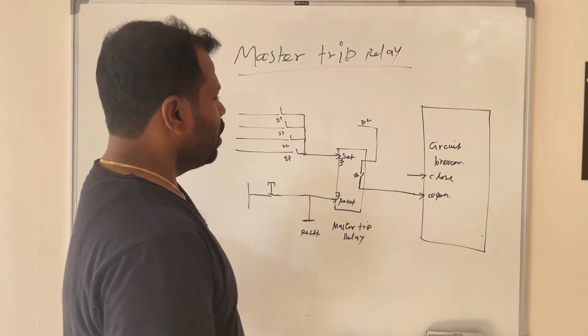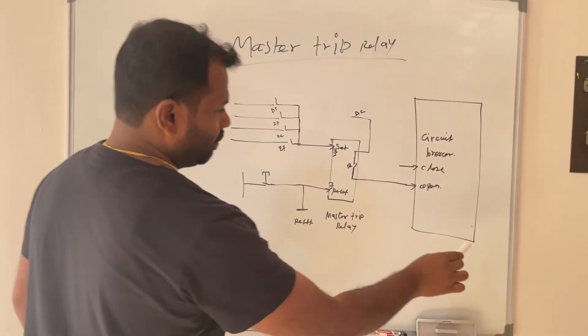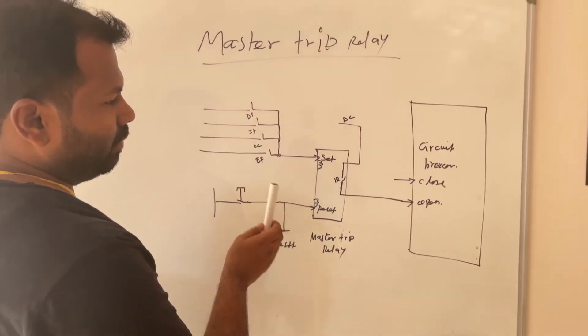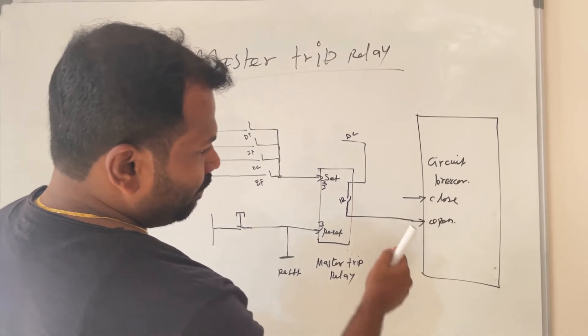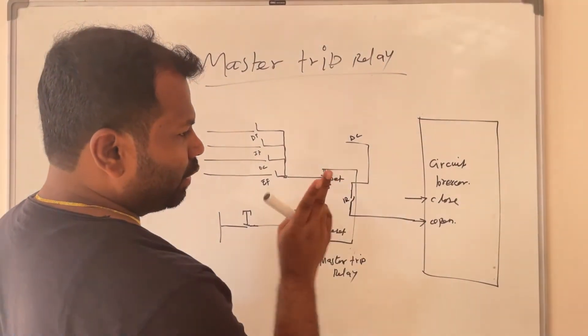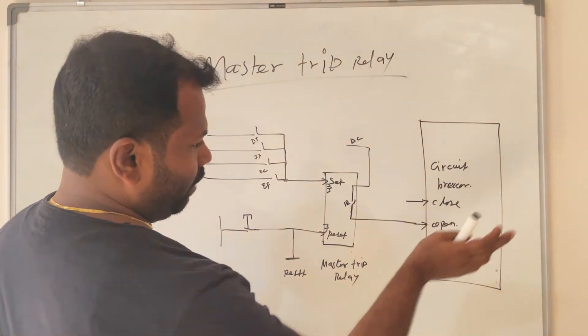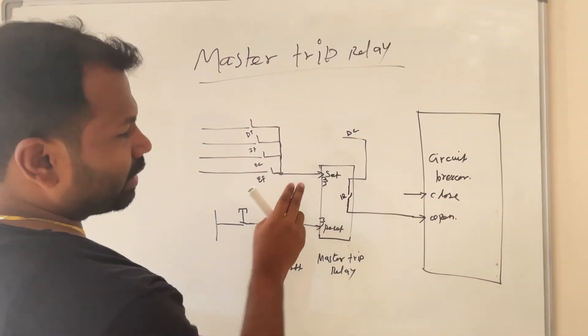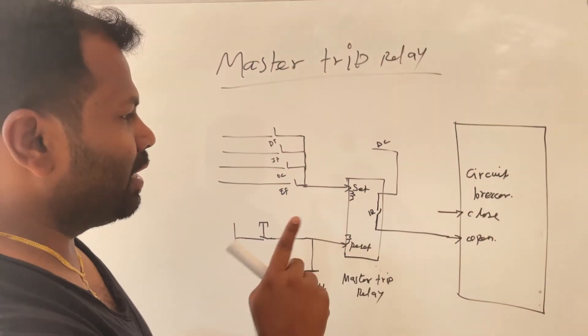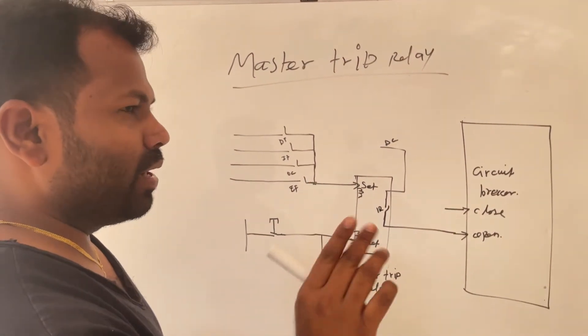This is a basic function block diagram for the master trip relay. This is the circuit breaker. In every circuit breaker there will be two coils: close coil and open coil. This is the master trip relay. Master trip relay has two coils: one is set coil, another one is reset coil. Set coil means trip, reset.